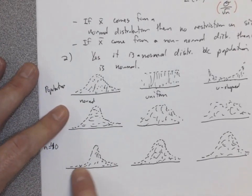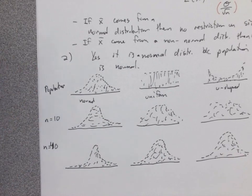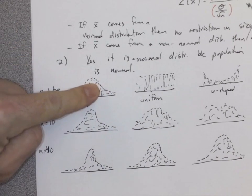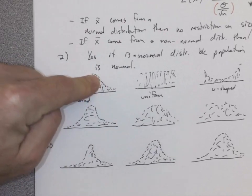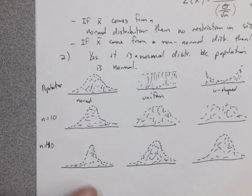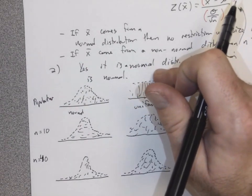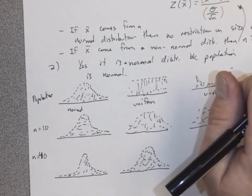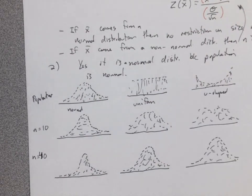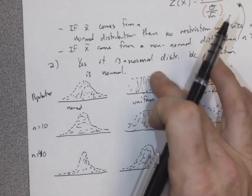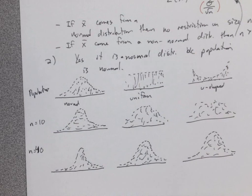You can use Z-scores for sample means. So question two: the distribution of dog weights is already normal, so even with sample size 10 or 40, it doesn't matter — they're all normal. Compare that to random digits on a phone, which have a uniform distribution. If you take samples and compute their means, that uniform distribution will bell-shape as n approaches 40.